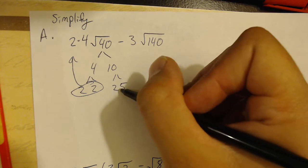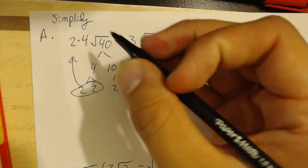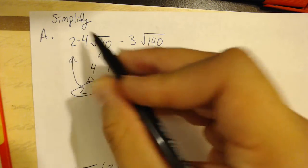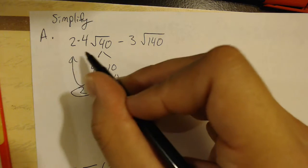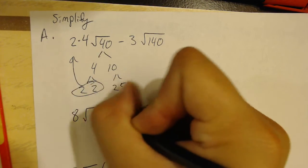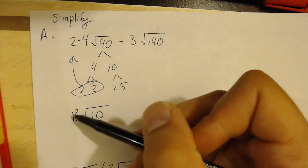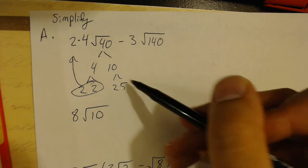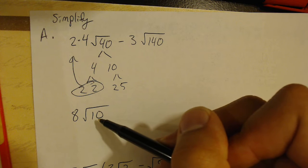Any numbers that don't have pairs, stay trapped in the radical, and get written that way. So, this 4 times square root of 40 becomes 8 times the square root of 10. 2 and 4 multiply to become 8. 2 and 5 group back together to become 10, since we couldn't take them out.